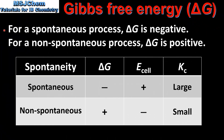For a spontaneous process delta G is negative, and for a non-spontaneous process delta G is positive. In this table we have the relationship between the sign of delta G, the sign of the cell potential, and the value of the equilibrium constant Kc. For a spontaneous reaction delta G is negative, the cell potential is positive, and the value of Kc tends to be large. For a non-spontaneous reaction the sign of delta G is positive, the sign of the cell potential is negative, and the value of Kc tends to be small.